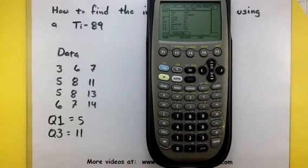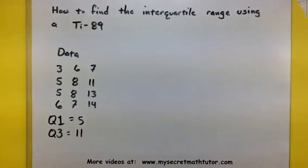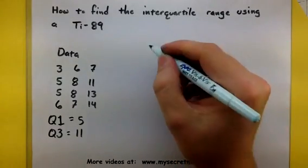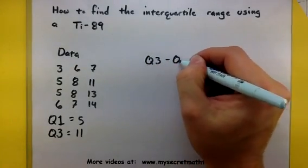That's all we need our calculators for, so let's set this off to the side and compute the interquartile range. This is going to be Q3 minus Q1.